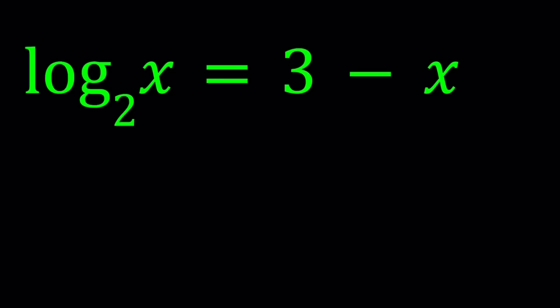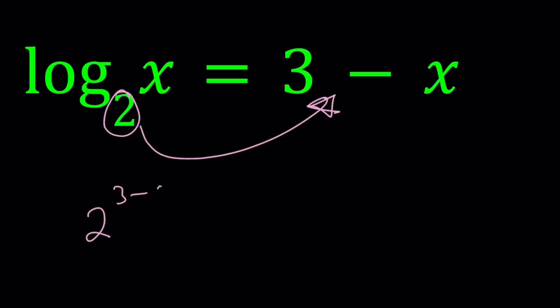So let's go ahead and use the definition of logarithms. This is the base, and that is the exponent. So this can be written as 2 to the power 3 minus x equals x. That's what's cool about logarithms — you can turn them into exponentials, and exponentials can be turned into logarithms. So by definition, we get this equality.